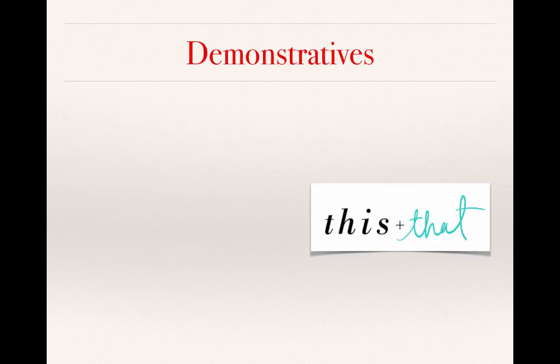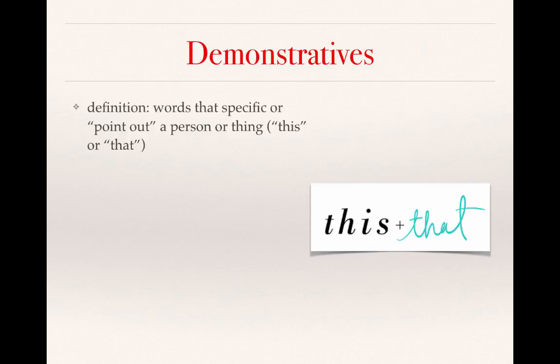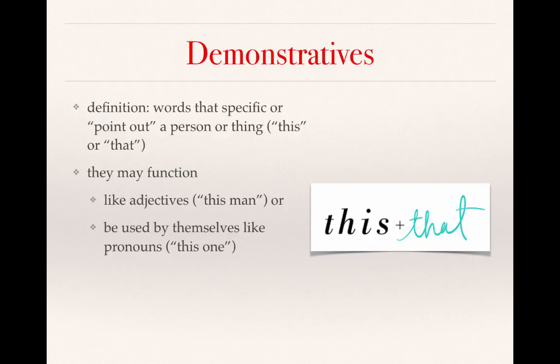Now we introduce a new concept, which are demonstratives. Demonstratives are words that specify or point out a specific person or thing. In English, we would translate them as this or that. Demonstratives may function like adjectives, like this man, or they can be used by themselves, like pronouns — this one or that one.